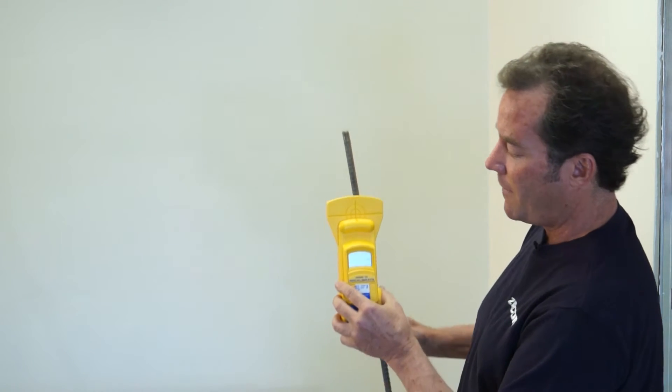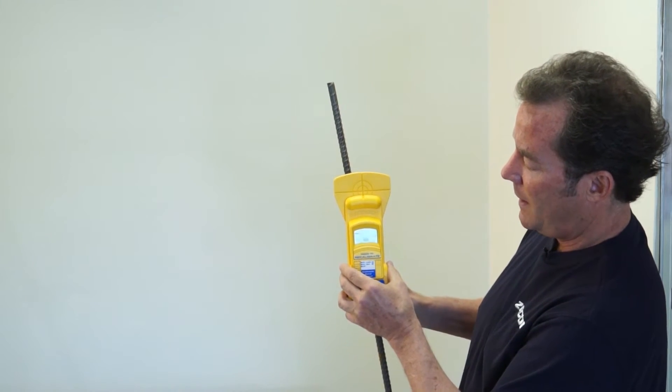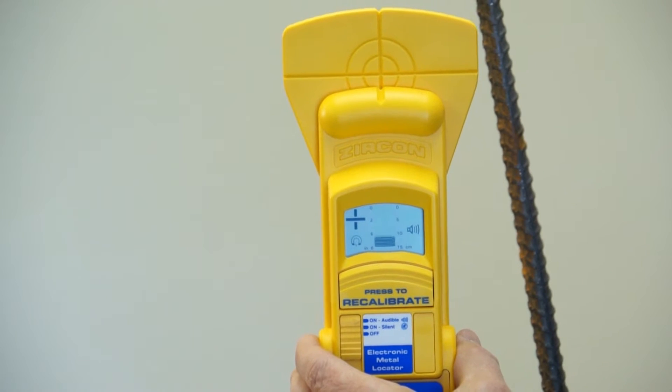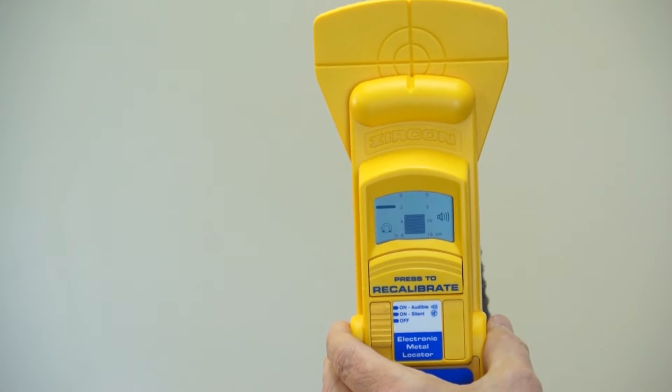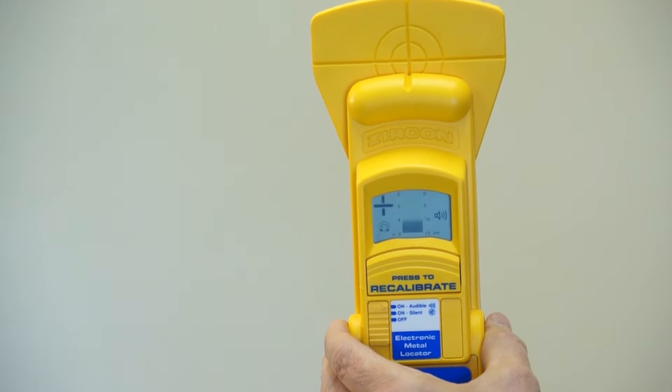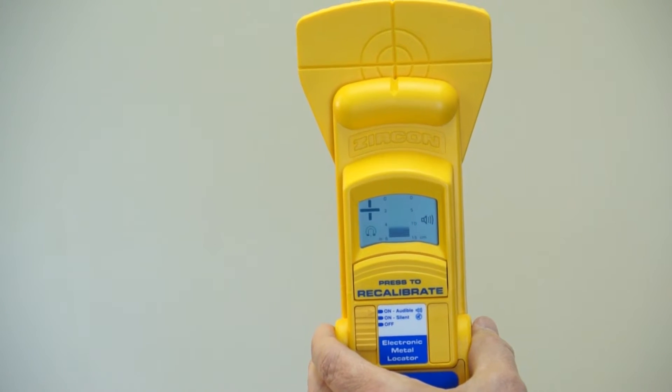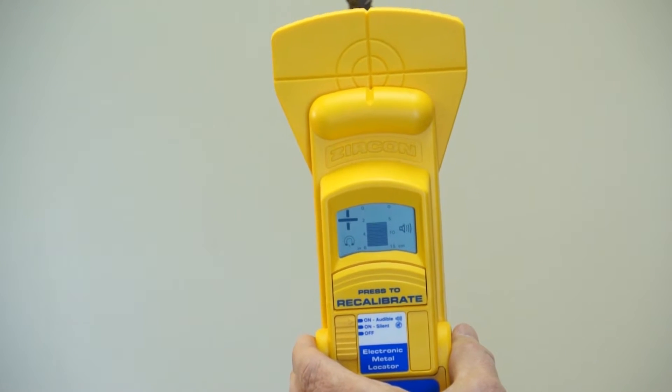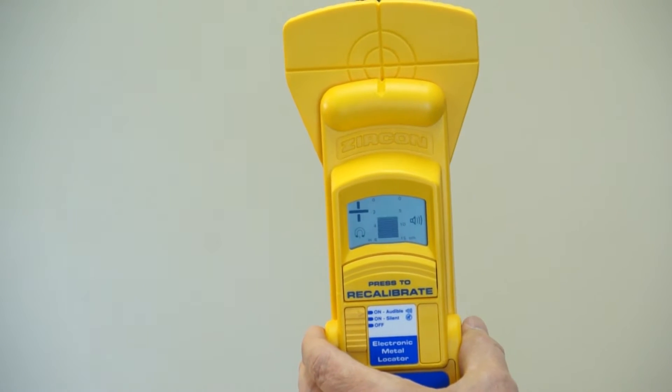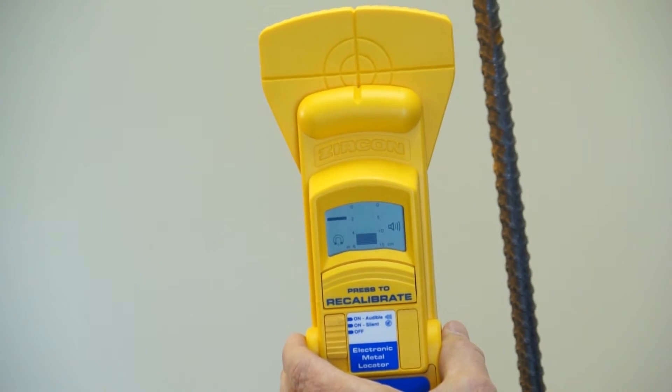So for concrete, this can find rebar up to six inches deep. If you look at the screen, plus sign means we're getting closer to the target and minus sign means we've passed the target. In the center we have the depth or signal strength bars with inches on the left and centimeters on the right. Right below the plus minus sign, it's giving us a horseshoe magnet, and that's telling us this is ferrous metal.